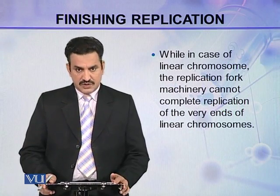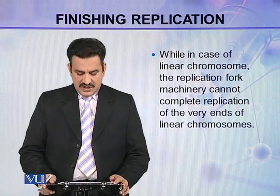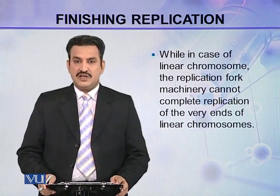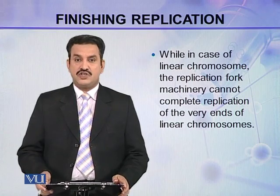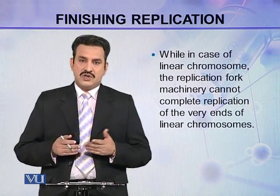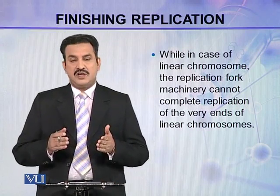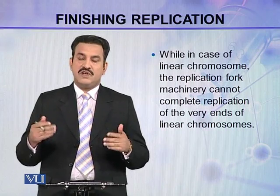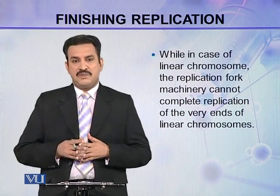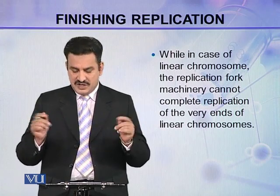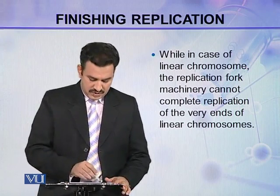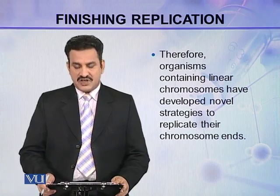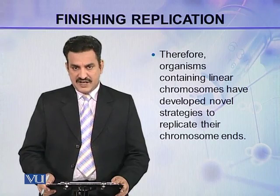In the case of linear chromosomes, the problem is different. The replication machinery cannot completely replicate the very ends of the linear chromosomes. These very ends of the chromosomes are called telomeres. The replication machinery cannot complete the replication at the ends in the case of linear chromosomes. Therefore, organisms containing linear chromosomes have developed novel strategies to replicate their chromosome ends, or telomeres.